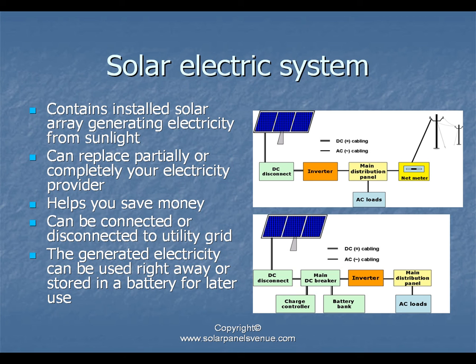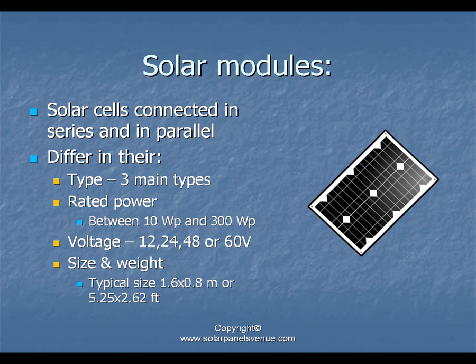A solar electric system is the ultimate application of solar modules. It contains an installed solar array generating electricity from sunlight. A solar electric system can replace your electricity provider partially or completely, saving you money. The system can be connected to or disconnected from the utility grid, and the generated electricity can be used right away or stored in a battery for later use.